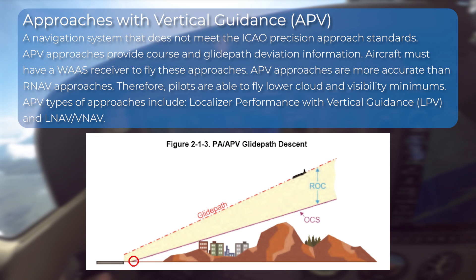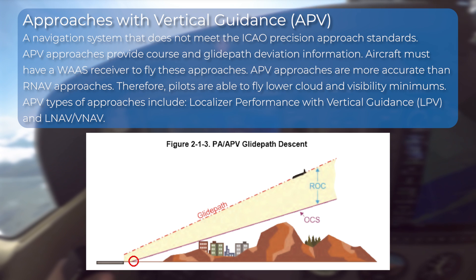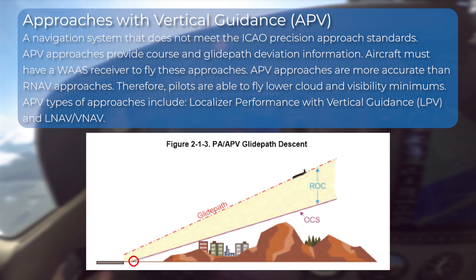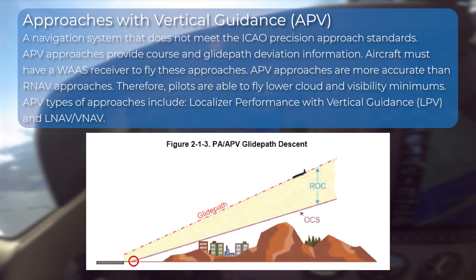Approaches with vertical guidance are based on a navigation system that does not meet the ICAO precision approach standards. APV approaches provide course and glide path deviation information. Aircraft must have a WAAS receiver to fly these approaches. The APV approaches are more accurate than RNAV approaches; therefore, pilots are able to fly lower cloud and visibility minimums. The APV types of approaches include localizer performance with vertical guidance and LNAV/VNAV.